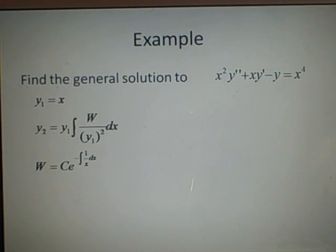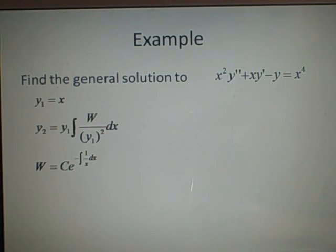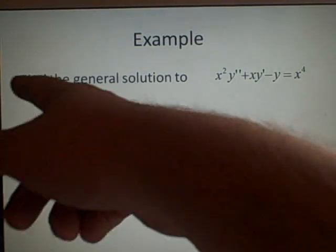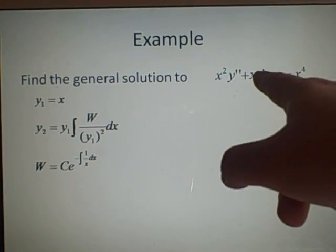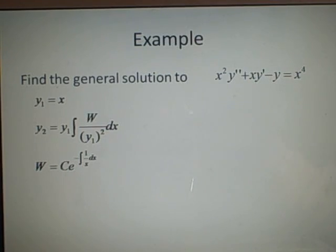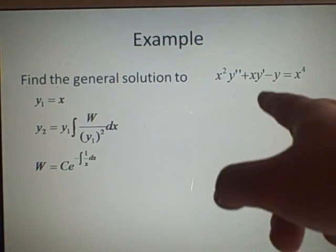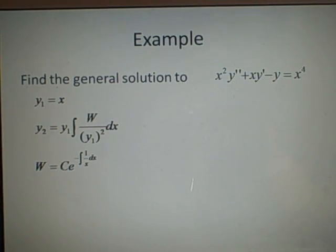We can see that our first solution is going to be y1 equals x — that's given. We're just solving it homogeneously at the moment. If y1 equals x, differentiate to get 1, differentiate again to get 0. So x·0 + 1·x − x = 0, which checks out.